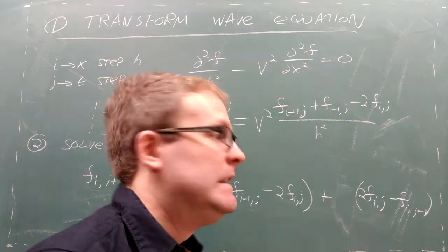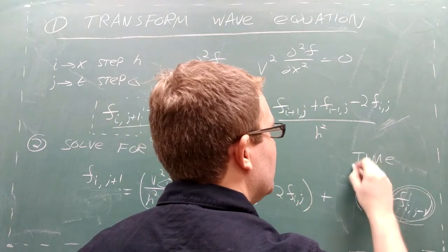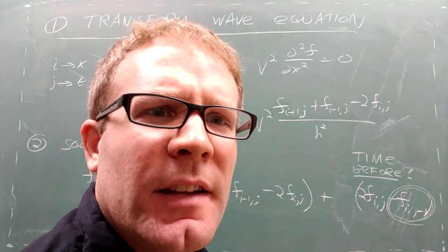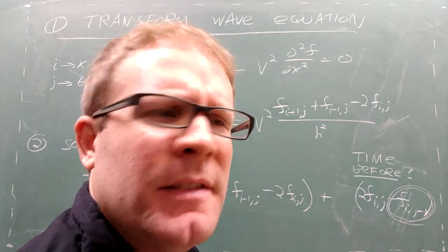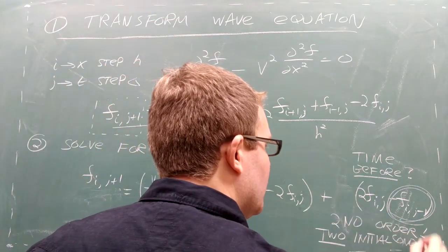To get started with j equals 1, we need the shape of the string at j equals 0 and at j equals negative 1, some mysterious time before we plucked the guitar string. Did we accidentally pluck with 1.21 gigawatts? This is a second order differential equation after all, so we need two initial conditions.